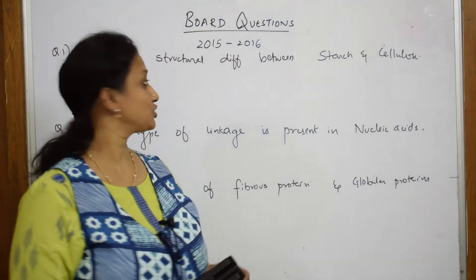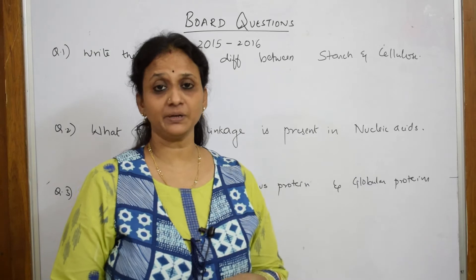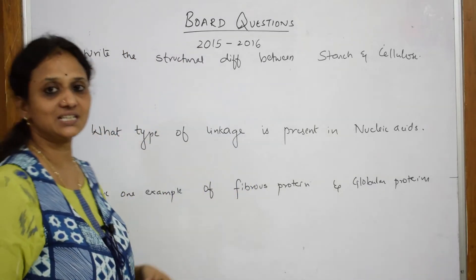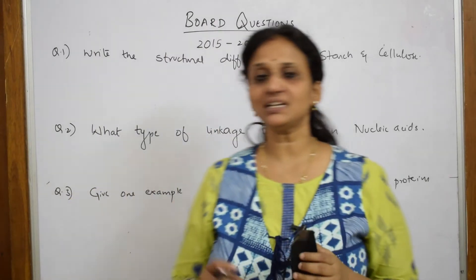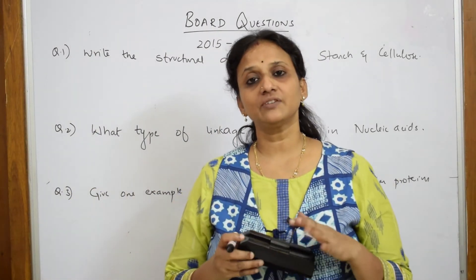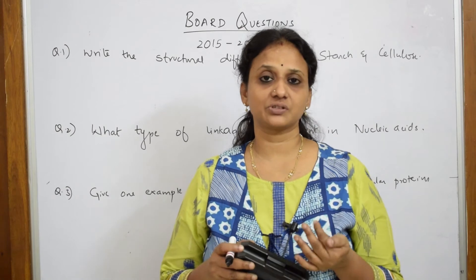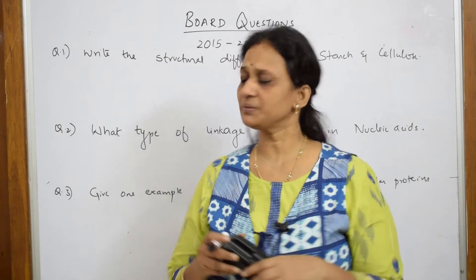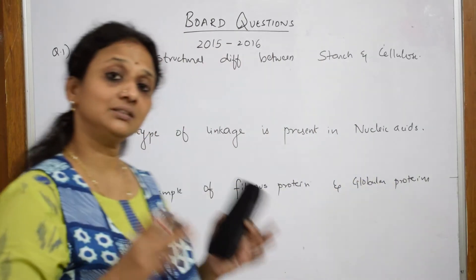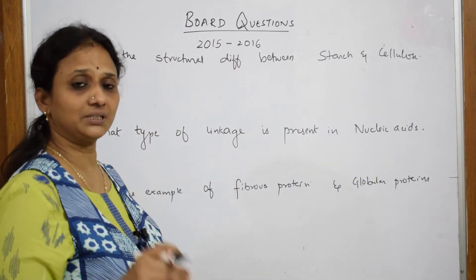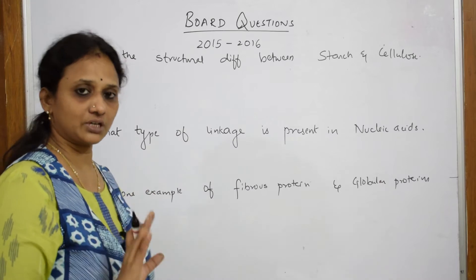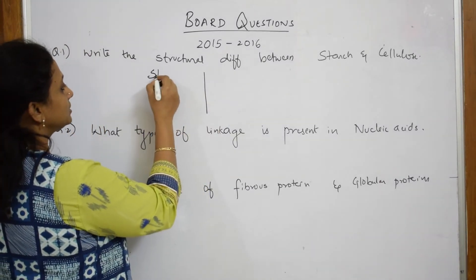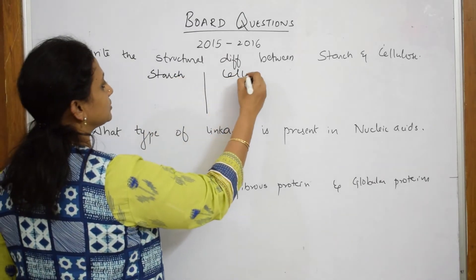Let us come back to the 2015-16 paper. The question asks you to write the structural difference between starch and cellulose — it's basically a three-mark question. They've asked you to write only the structural difference. Don't start writing the properties. Divide your page and write starch on one side and cellulose on the other.